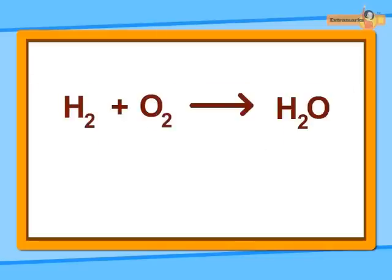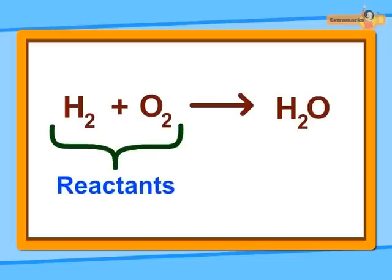In this chemical equation, the substances on the left side of the equation are called reactants, and the substances on the right side are called products.